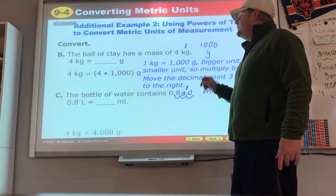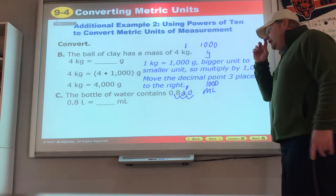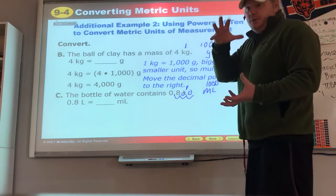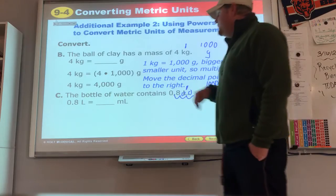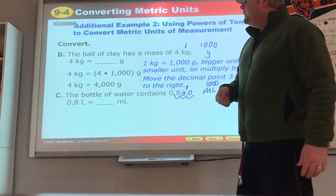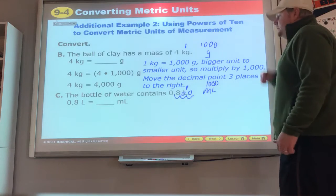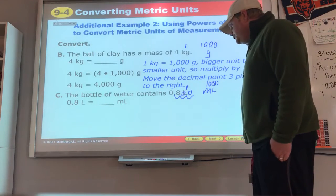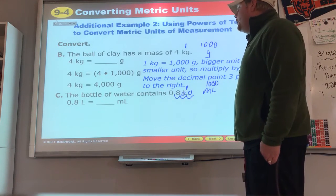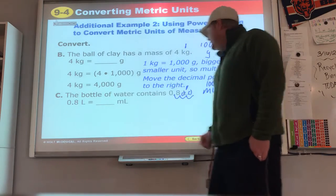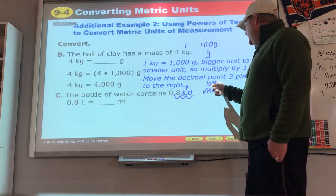Now we have a 0.8 liter bottle of water, like a two liter but only half that, and we're going to switch to milliliters, which is like a spoonful. So we are going from something big to something small. So we are going to multiply. One thousand milliliters makes one liter, so we know multiply by that thousand and we get our answer of 800 milliliters.